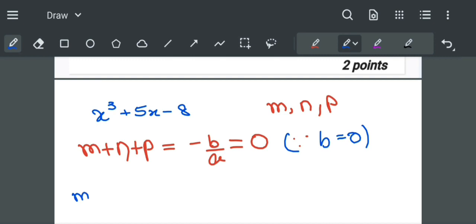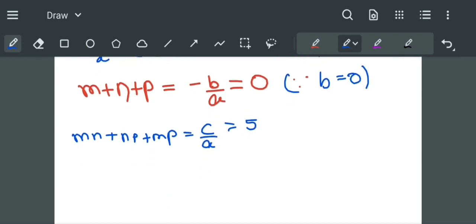Now mn plus np plus mp is equal to c by a which is equal to 5. And mnp is equal to minus d by a which is equal to 8.